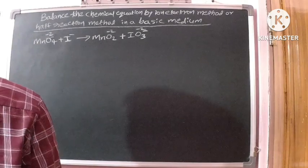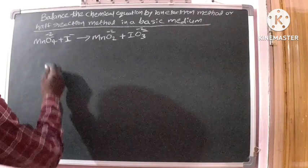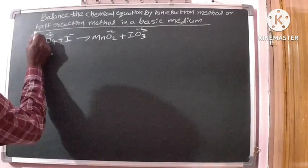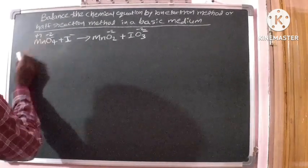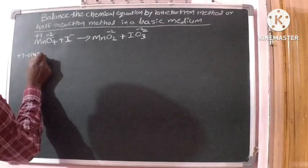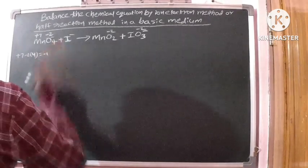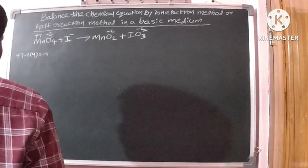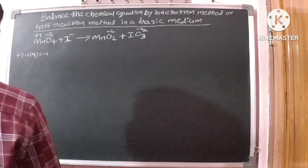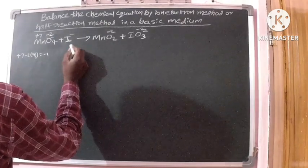By the rules of ascending oxidation numbers, the oxidation number of a polyatomic ion is equal to the charge of the ion. Here MnO4⁻ is a polyatomic ion, so the oxidation number of Mn is plus 7, because plus 7 minus (2×4) equals minus 1. Also, I⁻ is a monatomic ion, so the oxidation number of I⁻ is minus 1.